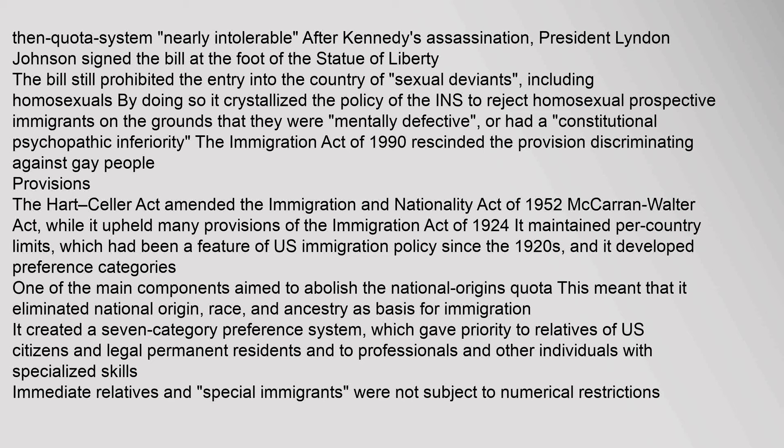The Immigration Act of 1990 rescinded the provision discriminating against gay people. The Hart-Celler Act amended the Immigration and Nationality Act of 1952 (McCarran-Walter Act), while it upheld many provisions of the Immigration Act of 1924. It maintained per-country limits and developed preference categories. One of the main components aimed to abolish the national origins quota, eliminating national origin, race, and ancestry as basis for immigration. It created a seven-category preference system which gave priority to relatives of U.S. citizens and legal permanent residents, and to professionals and other individuals with specialized skills. Immediate relatives and special immigrants were not subject to numerical restrictions.